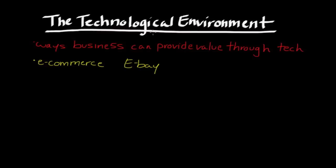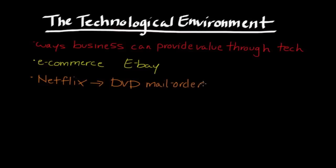Another good example of a company that has used technology as a way to provide value is Netflix. Netflix came on the scene probably in the mid-2000s and they were very popularly known for their DVD mail-order business, which is the first element they rose to prominence with. That was in direct competition to services like Blockbuster and really put them on the map. They used technology in terms of logistics for the purpose of organizing that type of system, but the DVD business, while still around, is not the primary focus for Netflix anymore.